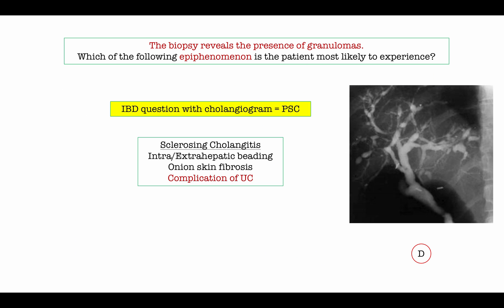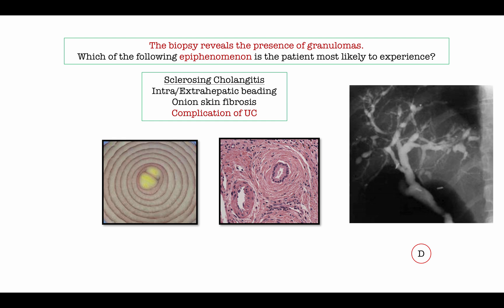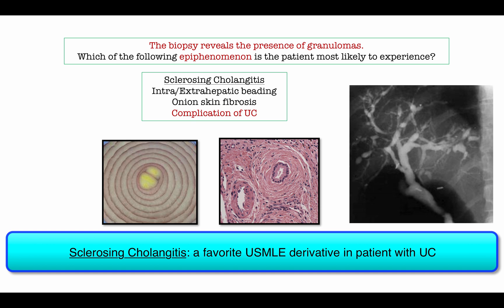Moving on: we have a patient with inflammatory bowel disease and a cholangiogram. Cholangiography in a patient with IBD equals sclerosing cholangitis. Primary sclerosing cholangitis typically complicates ulcerative colitis. It is characterized by intra- and extrahepatic involvement and the classic description of onion skin fibrosis. Be sure to link primary sclerosing cholangitis and ulcerative colitis.